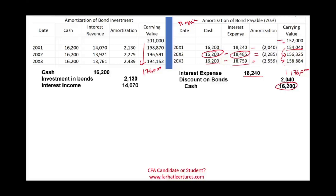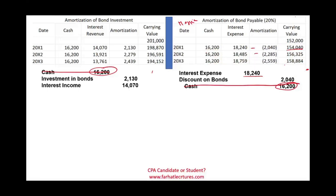Notice that the cash amounts — debit cash and credit cash — simply cancel each other out, so that's not a problem. However, the interest revenue and interest expense are not the same. Also, the carrying value of the investment on Adam's books differs from the carrying amount of the bond on Maggie's books — they have two different carrying values that must be resolved at consolidation.